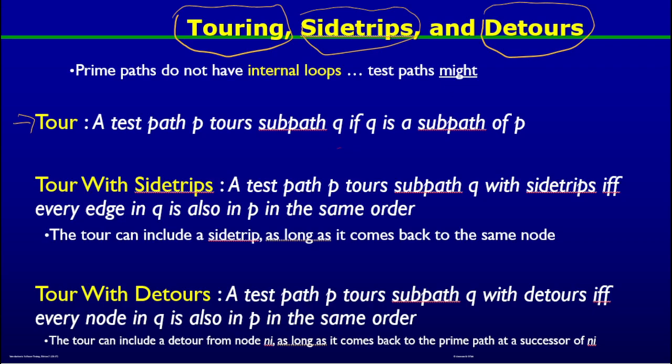We discussed that when a node or an edge is traversed by a test path, we say the test path visits that node or edge. When there are paths of length more than one, we call those sub-paths. If a test path traverses a sub-path q, we call this scenario the test path p touring sub-path q — meaning the test path is touring this sub-path.